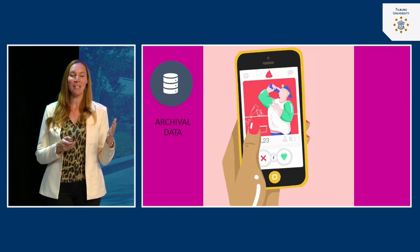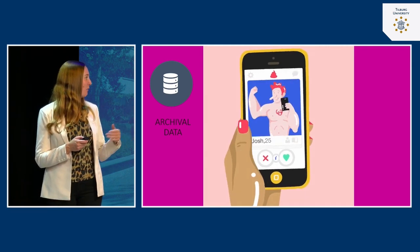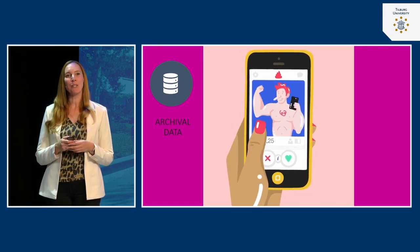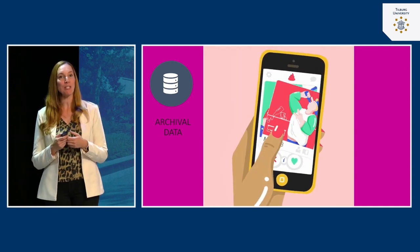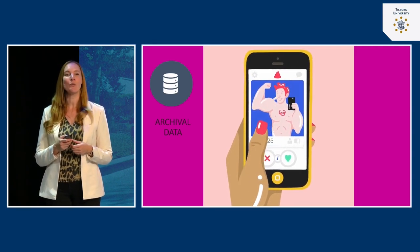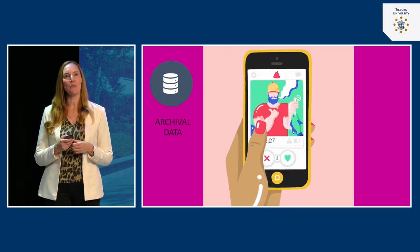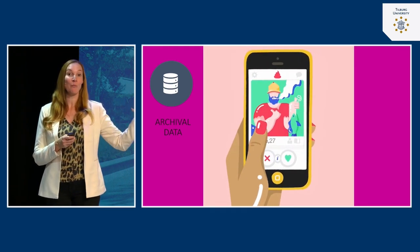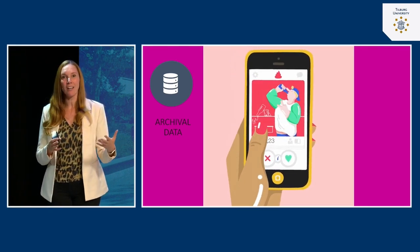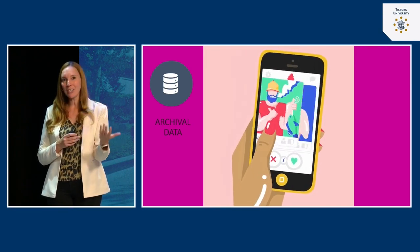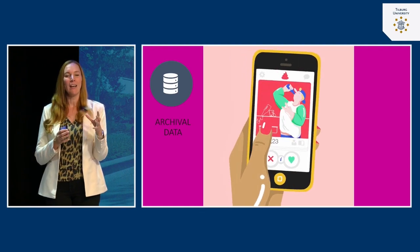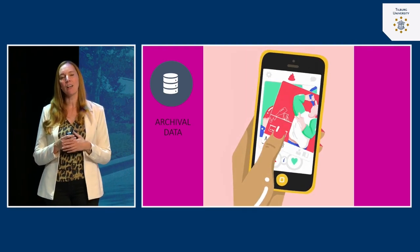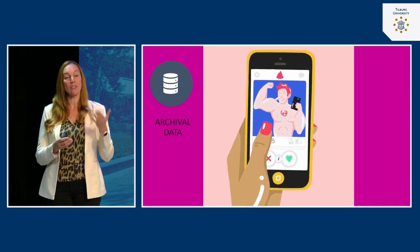Let's start with archival data. This is a dating application — actually a fake one that looks like Tinder. In this dating app you see profiles of potential partners and you can choose to accept by swiping right, or reject by swiping left. Using data from a real dating application like Tinder — data that's available in archives — means you don't have to run a study yourself; you just look up the numbers. Archives can also include newspapers or other sources to answer your research question.